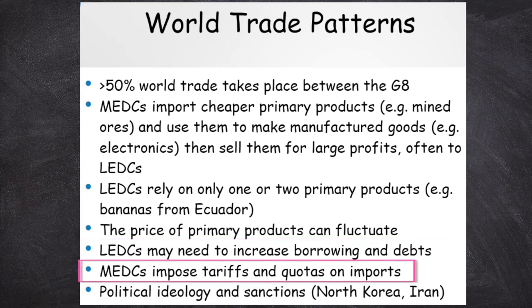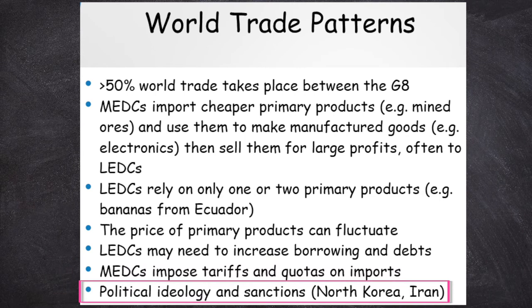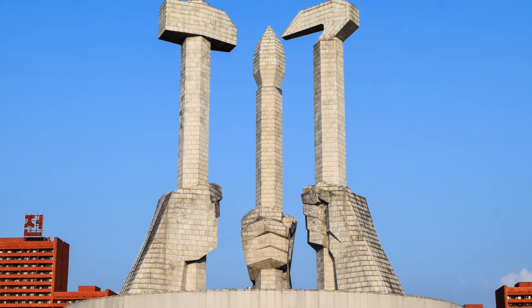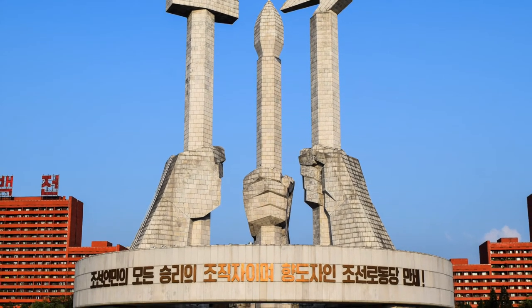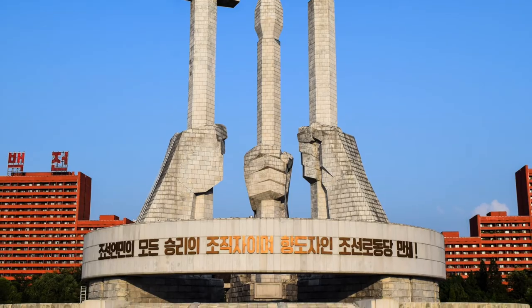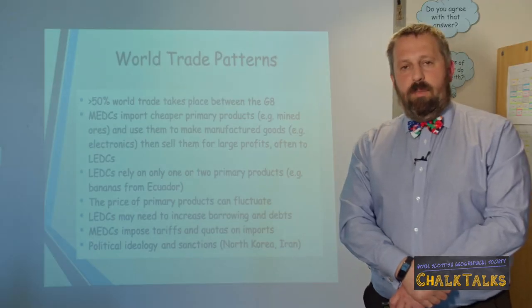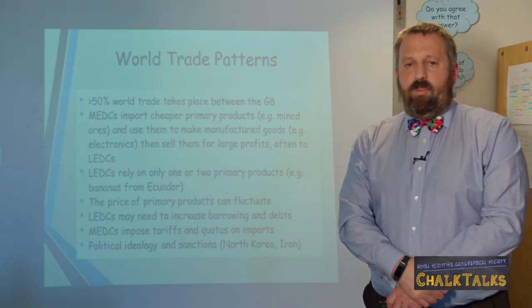More economically developed countries, meanwhile, can sometimes impose tariffs and quotas on imports from these poorer countries in order to protect their own industries. While political ideologies might lead some countries, as was the case with North Korea and Iran, to try and isolate themselves from the world trade system, or it can lead to other countries imposing sanctions on them from the outside.